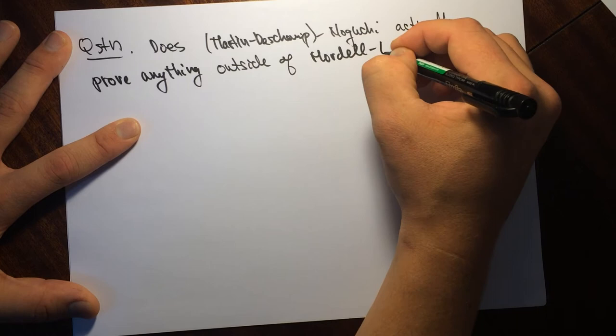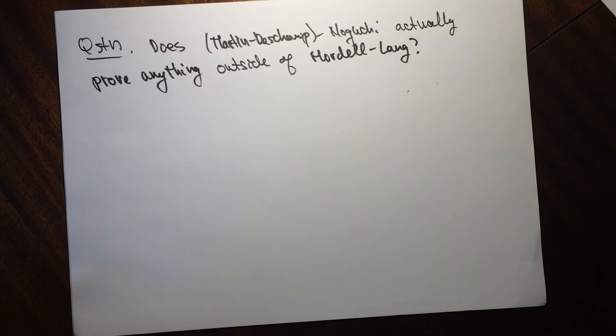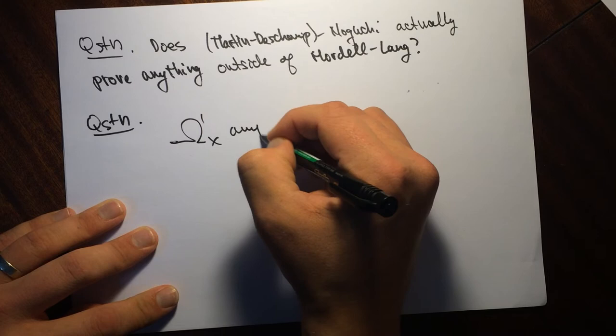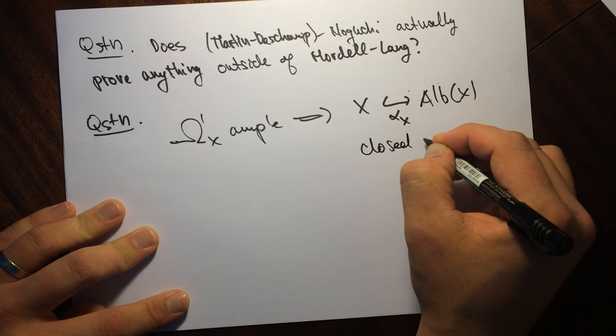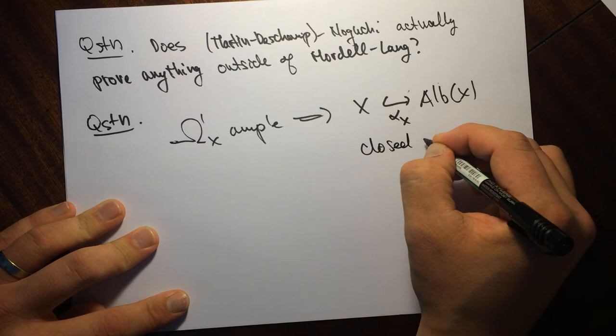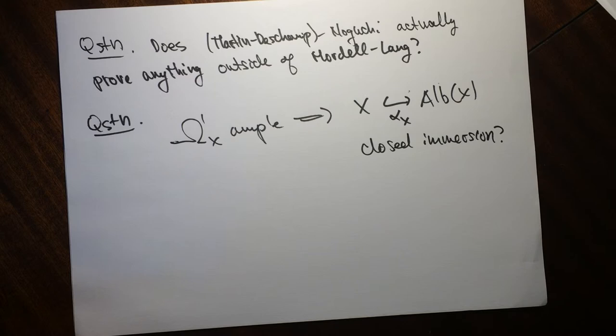In particular, if the cotangent bundle is ample, does this imply that the Albanese map alpha of X is a closed immersion? That is, are we just in the situation where we can apply the Mordell-Lange setup? This gets kind of interesting.